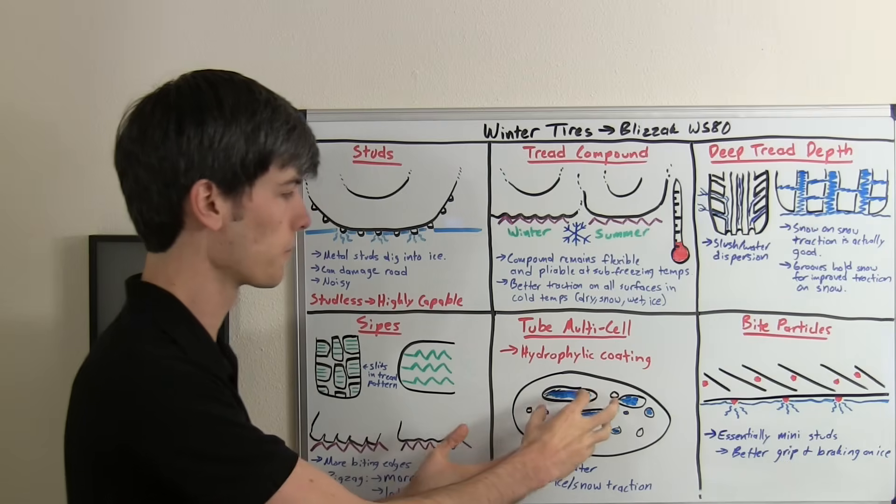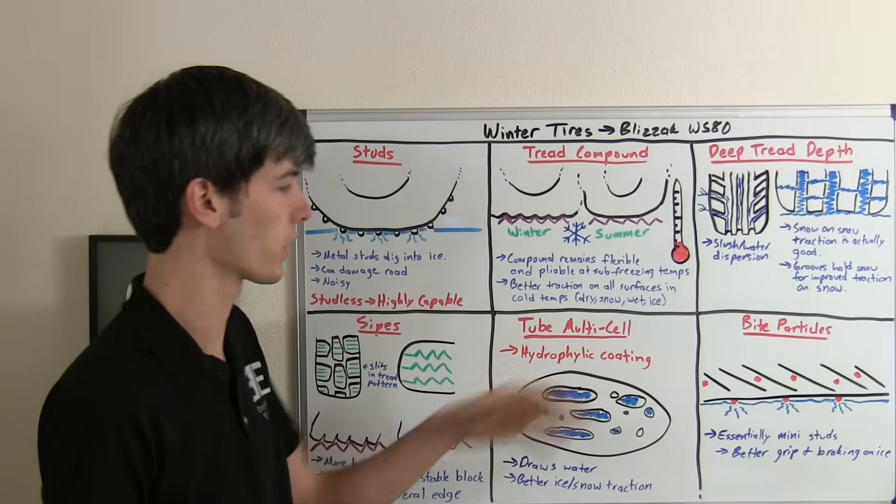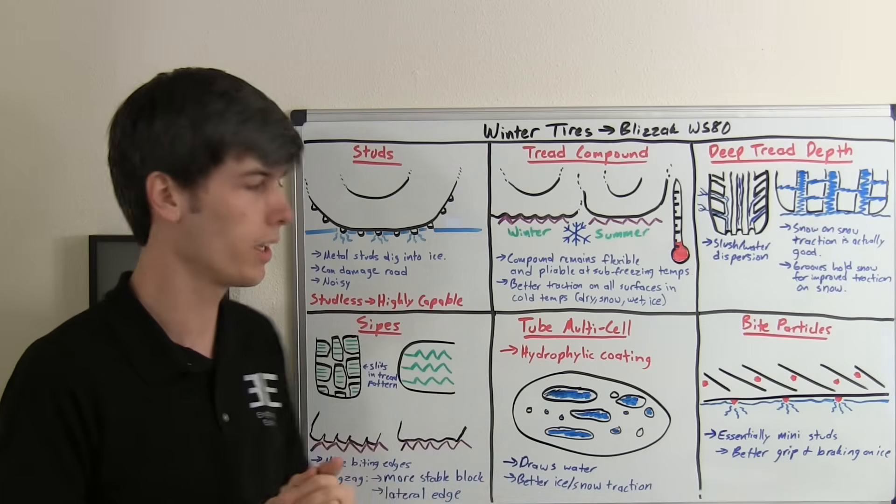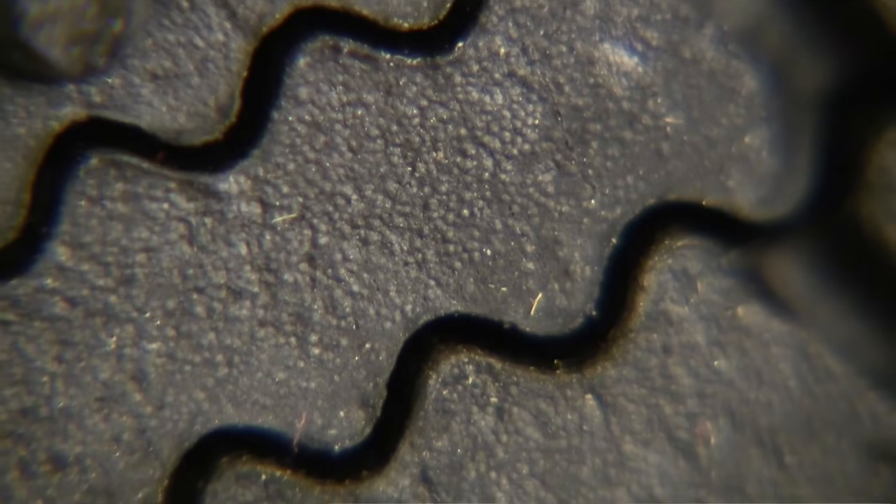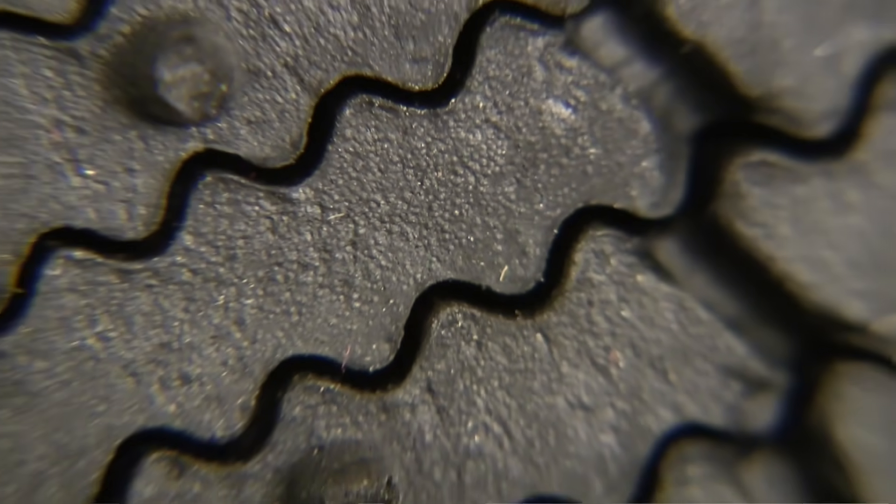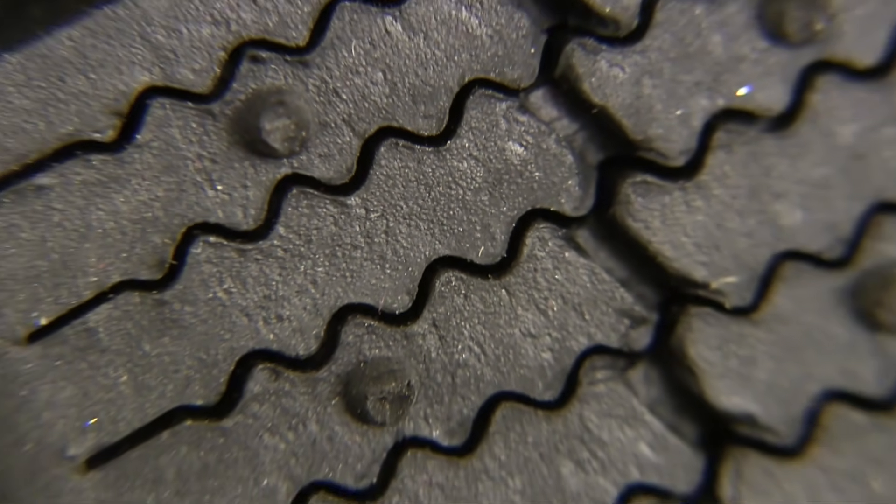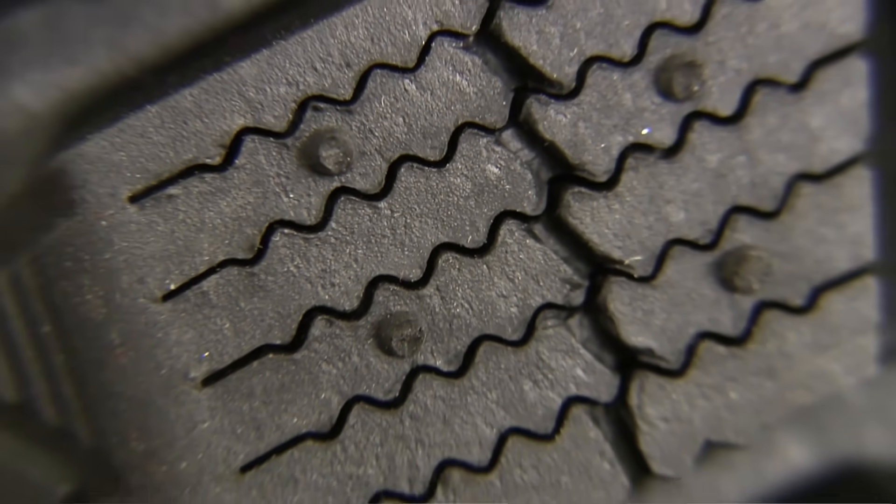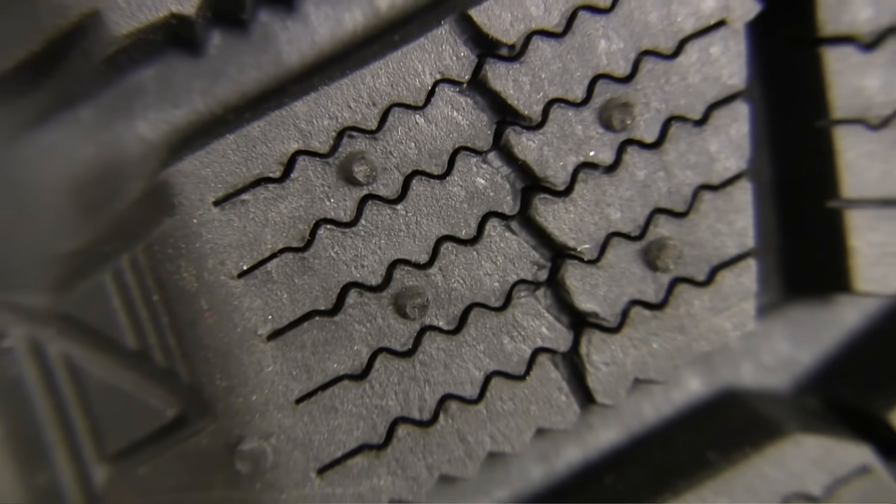What this is doing is these little air bubbles, and they also have a hydrophilic coating which helps to draw in water. What these bubbles are doing is drawing in that water into the tire to remove it from the surface of the road so that the tire can contact the ice directly and then have better traction.